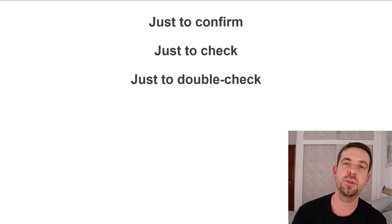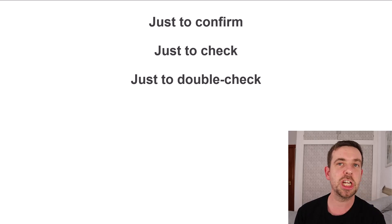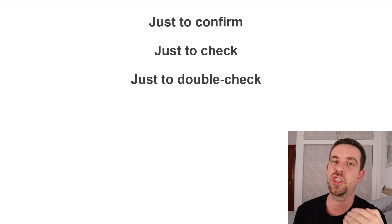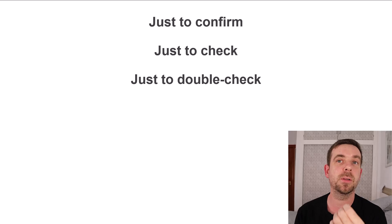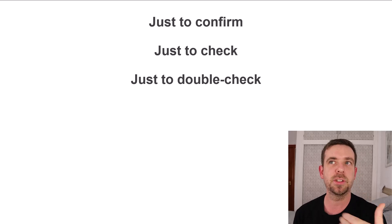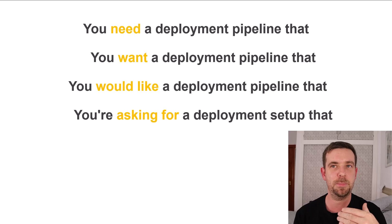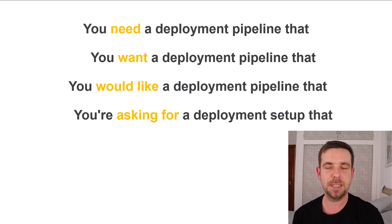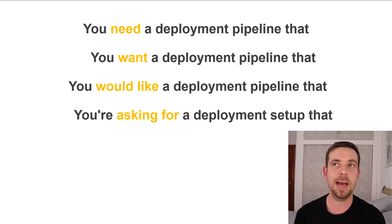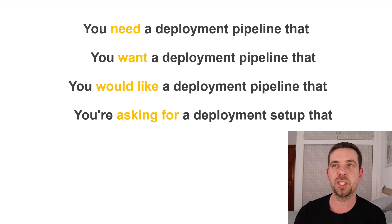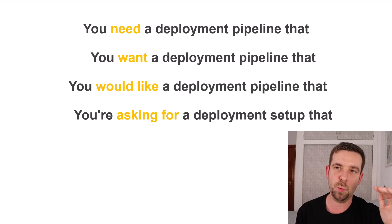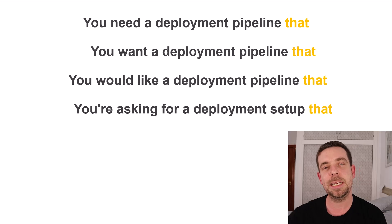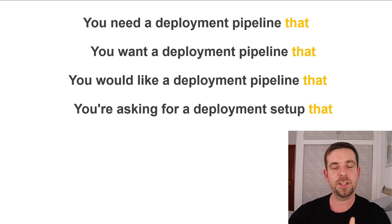The first part is just to confirm — stress on confirm. You can also say just to check or just to double check. Then: you need a deployment pipeline, you want a deployment pipeline, you would like a deployment pipeline, you're asking for a deployment pipeline. These are all variations of the same idea. You can substitute different verbs: need, want, would like, asking for.